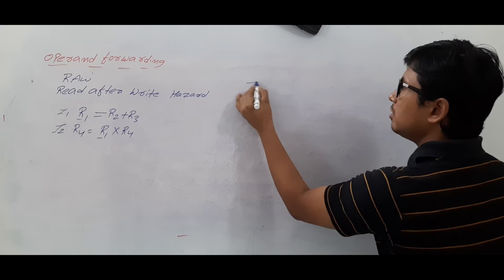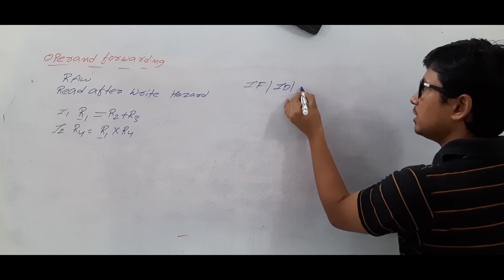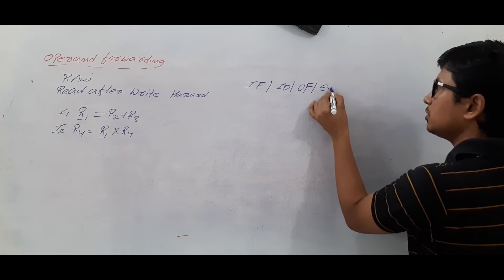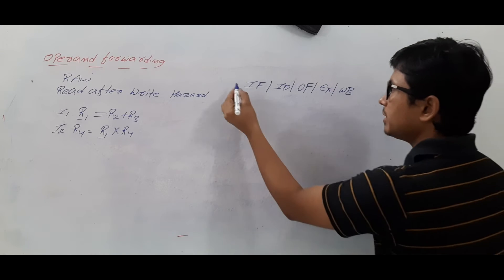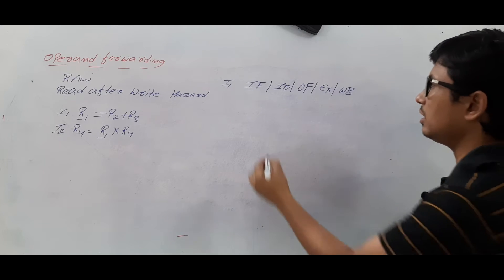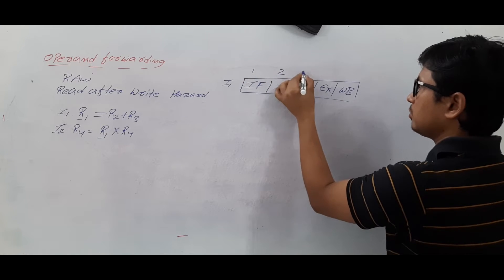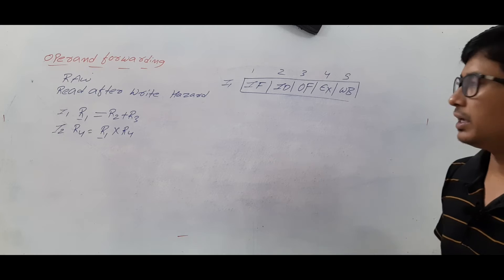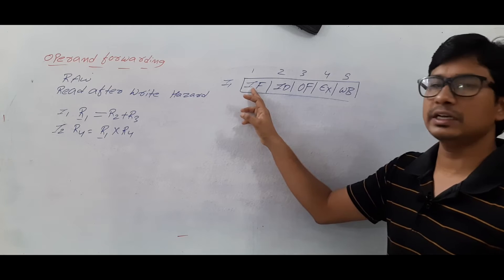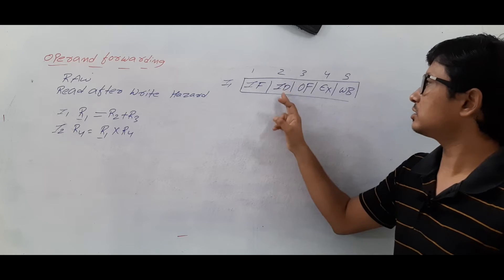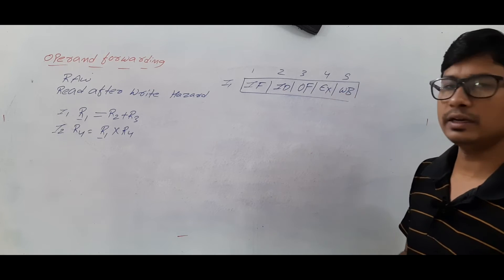If you execute these instructions using a pipeline — suppose a five-stage pipeline with instruction fetch, instruction decode, operand fetch, execute, and write back — how will it be executed? In clock cycle 1, instruction 1 will perform stage 1, instruction fetch. In clock cycle 2, it will execute instruction decode, then operand fetch, execute, and then write back.